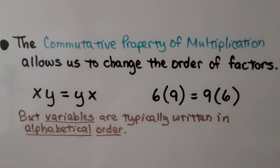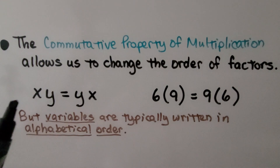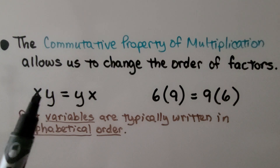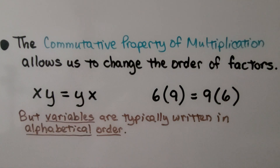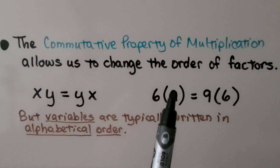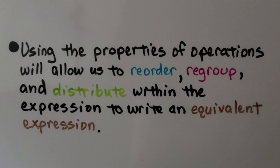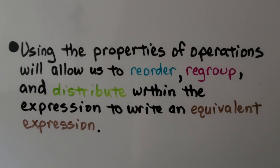The commutative property of multiplication allows us to change the order of factors. If we see x next to y, that's multiplication, and it's equal to y times x — just like six times nine equals nine times six. However, variables are typically written in alphabetical order. Using the properties of operations allows us to reorder, regroup, and distribute within an expression to write an equivalent expression.